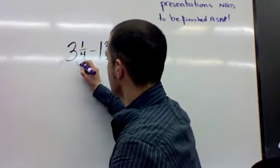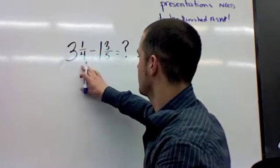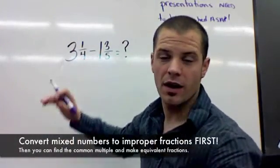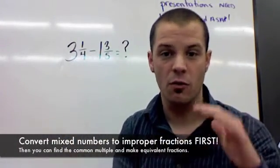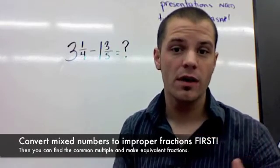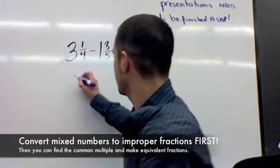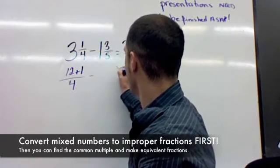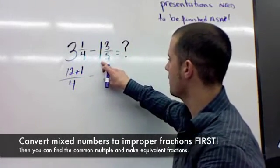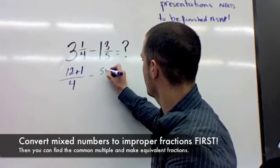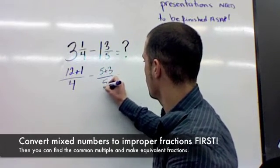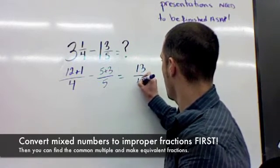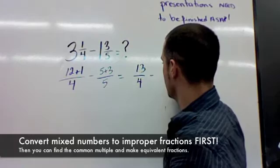The first thing we need to do is convert these into improper fractions. So 3 1/4 means that there are 3 units of 4 out of 4. So 4, 8, 12. So that's 12 plus 1 over 4. Subtract, okay, here's 1 3/5. So that would be 5 plus 3 over 5. So what that ends up actually being is 13 over 4 subtract 8 over 5.